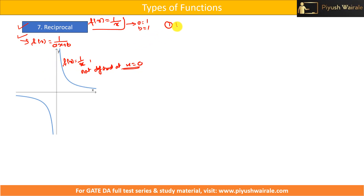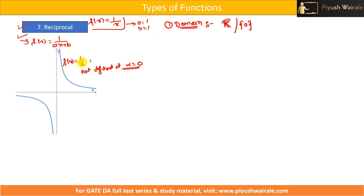Let us discuss about the domain of this particular function. This function is not defined at x = 0, but for all other numbers this function is defined. So the domain is all real numbers except x = 0. For the general form f(x) = 1/(ax + b), you need to equate the denominator ax + b to 0, and for that particular value of x, the function will not be defined.